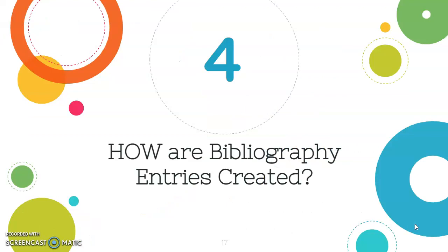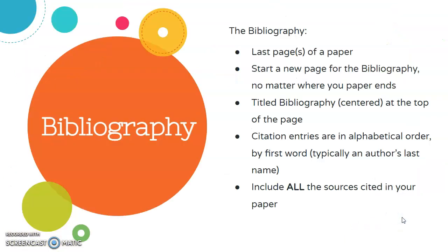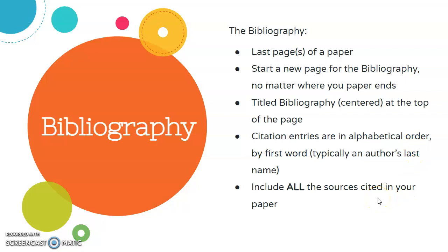So we've reviewed creating notes. Now let's take a look at creating bibliography entries. The bibliography is the last page of a paper. You will need to start a new page for the bibliography no matter where your paper ends. The page is titled 'Bibliography' and it's centered at the top of the page. Citation entries are listed in alphabetical order by first word, which is often an author's last name.